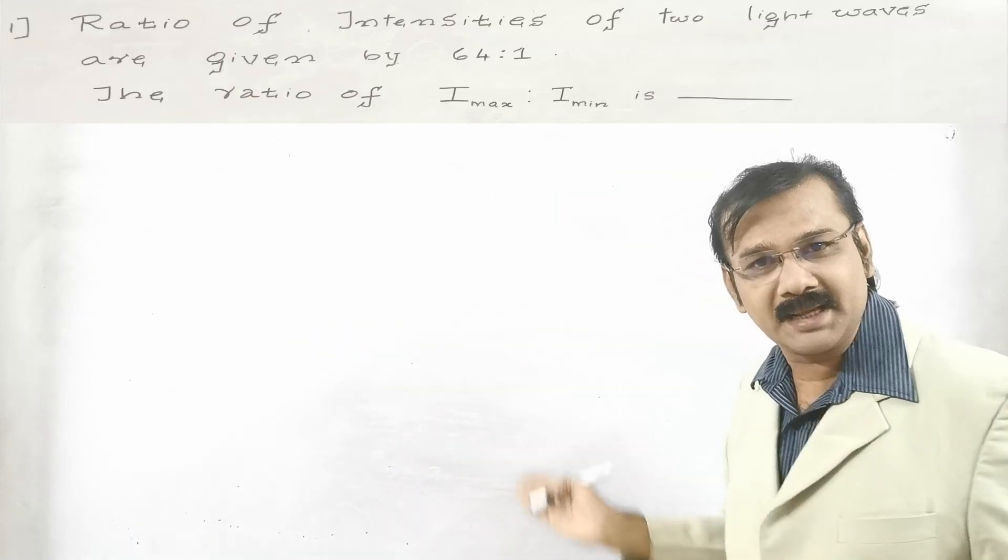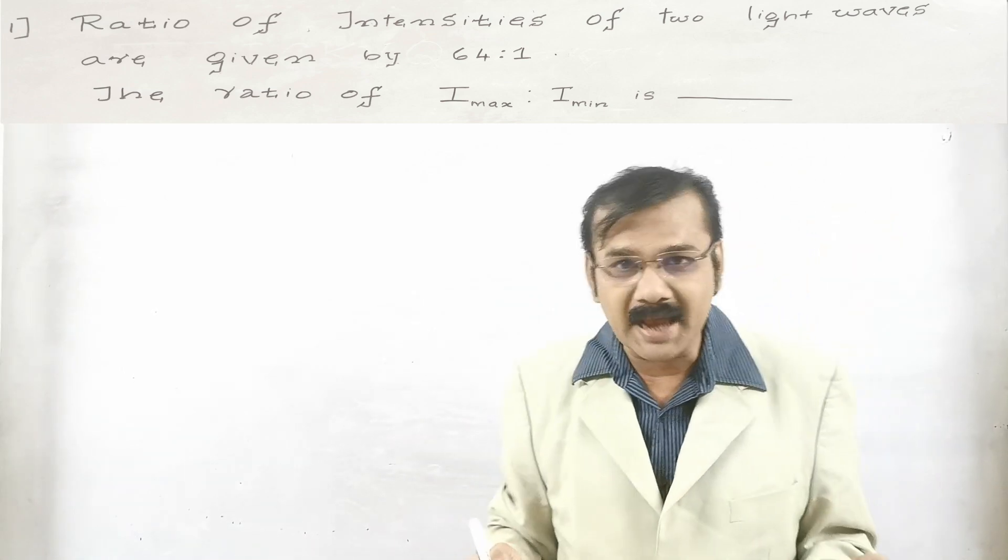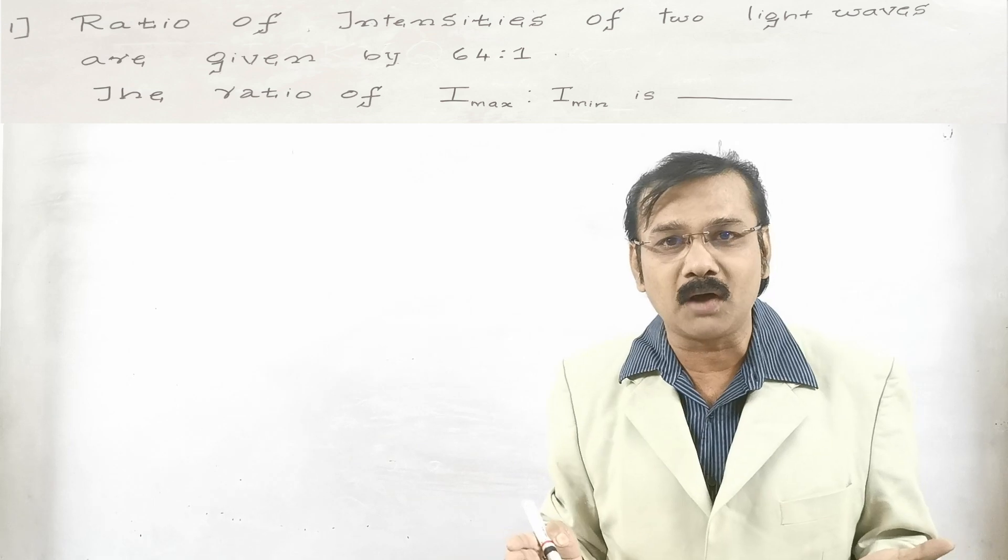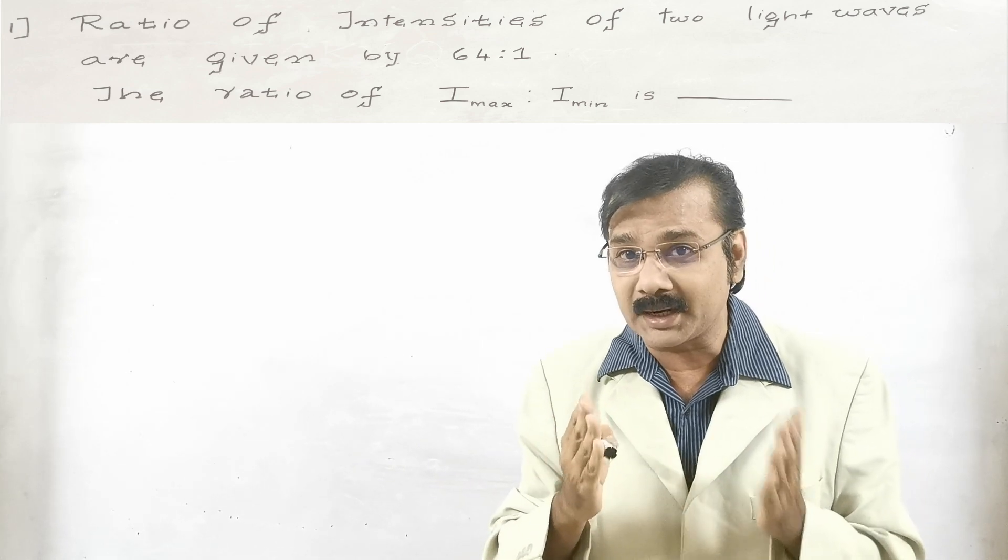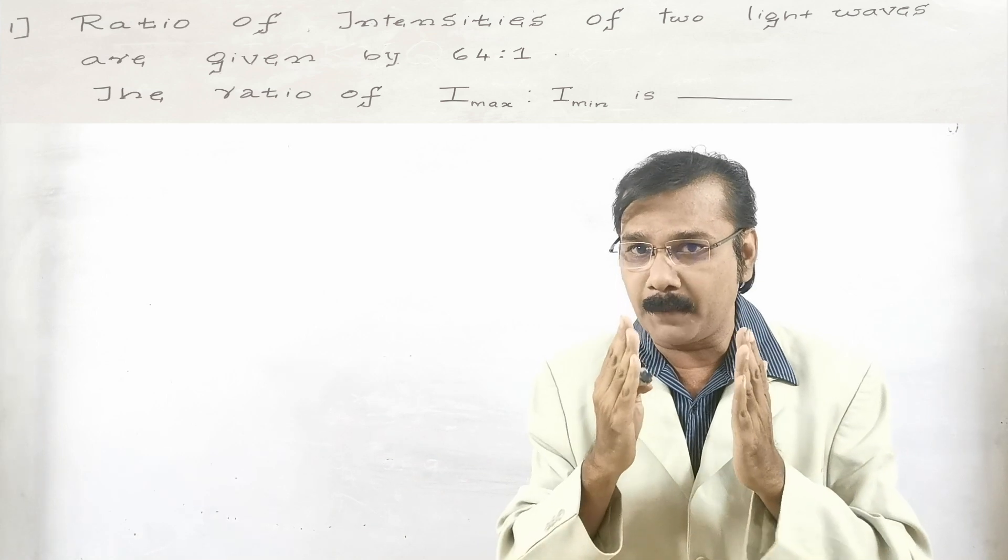What is the sum given in the board, the screen? The sum has been given as two light waves having an intensity of 64 is to 1. Remember that point. Only that important point you have to remember.